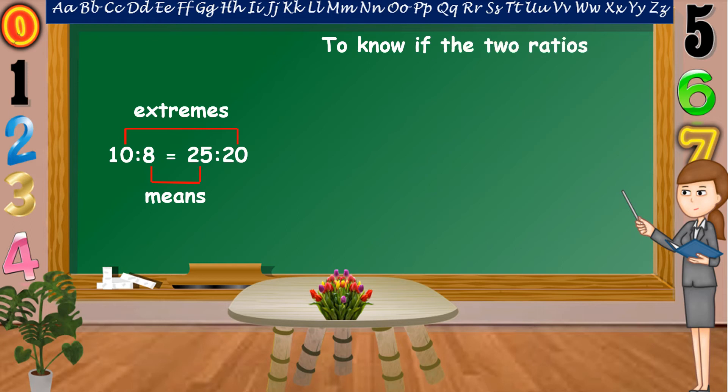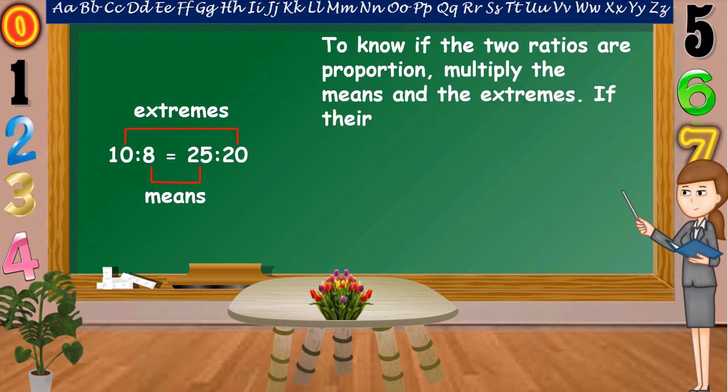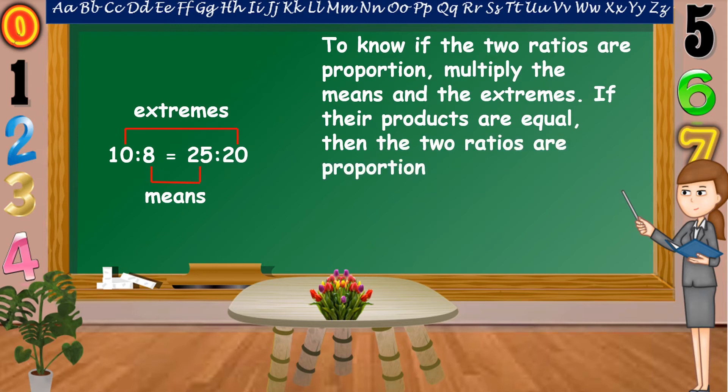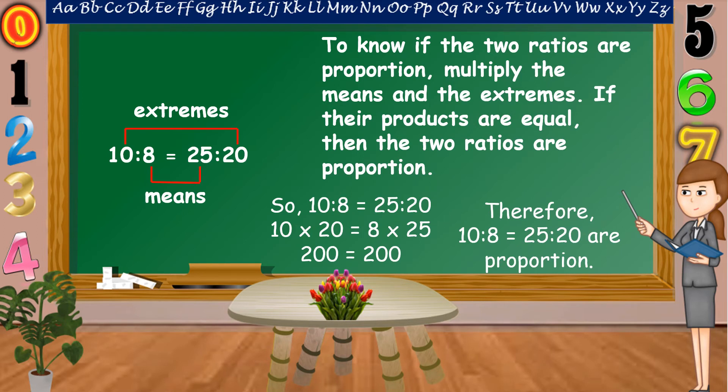So now, if the two ratios are proportion, multiply the means and the extremes. If their products are equal, then the two ratios are proportion. So, 10 is to 8, as 25 is to 20. Let's multiply the extremes and the means. 10 times 20 is equal to 8 times 25. 10 times 20 is equal to 200, as 8 times 25 is equal to 200 also. So, therefore, 10 is to 8, as 25 is to 20, are proportion.